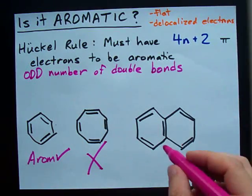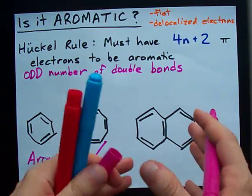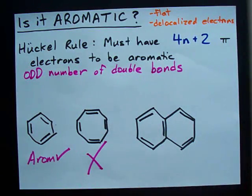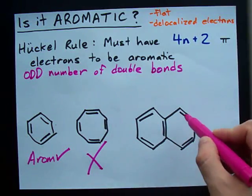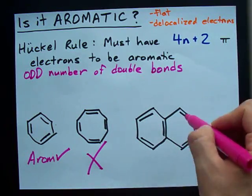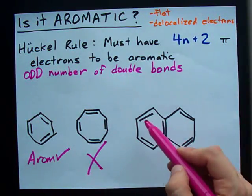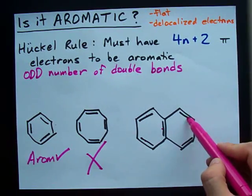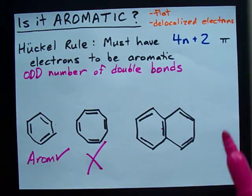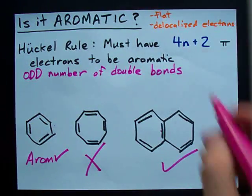This here is a molecule called naphthalene — it's what moth balls are made out of. I see we have rings and alternating double bonds, but let's make sure it's aromatic. One, two, three, four, five double bonds. It's aromatic!